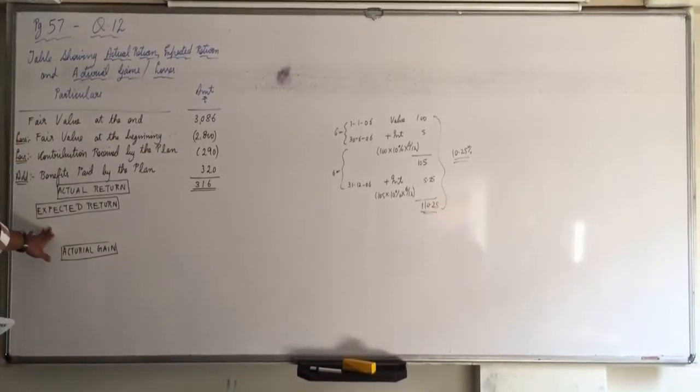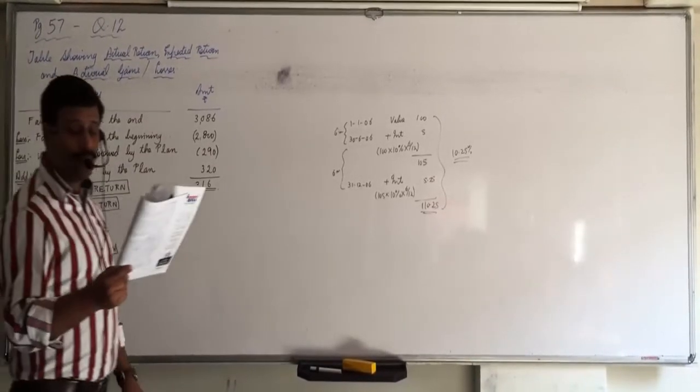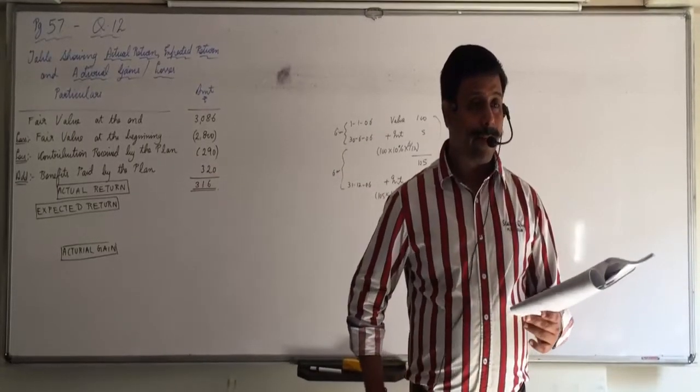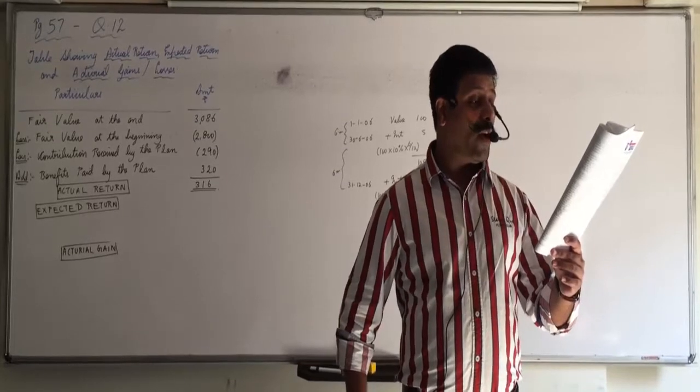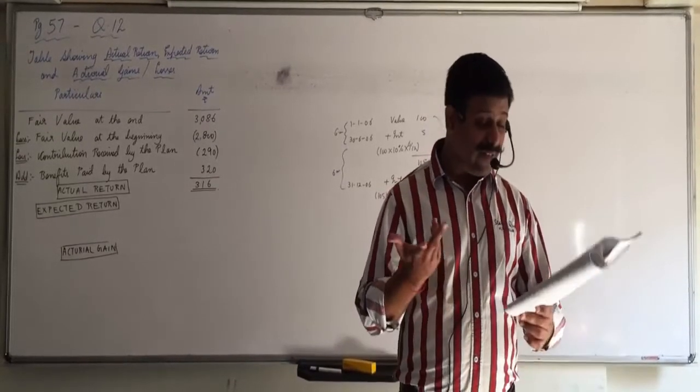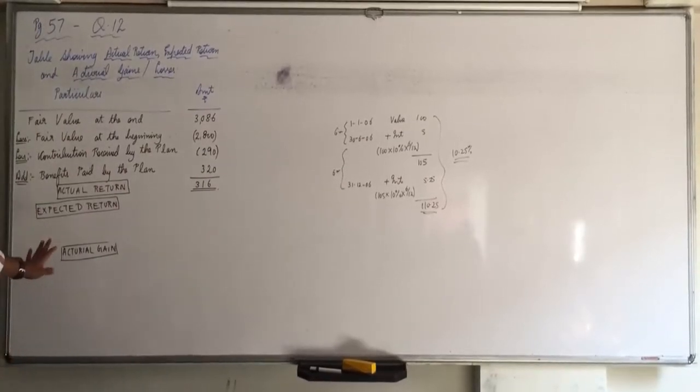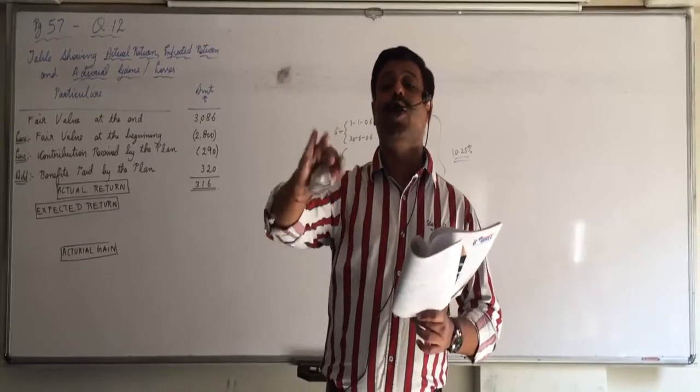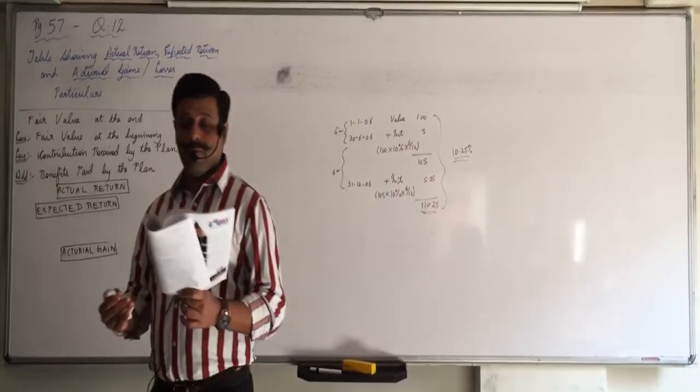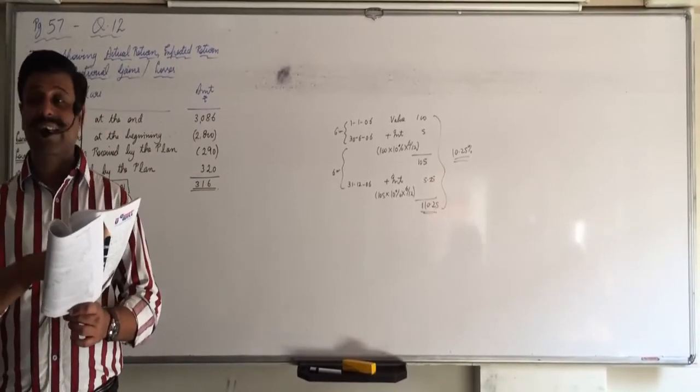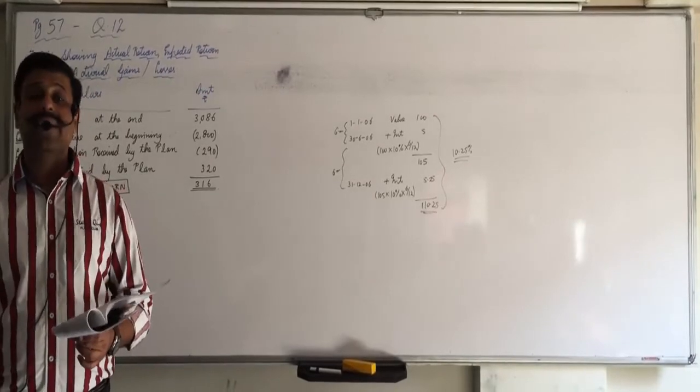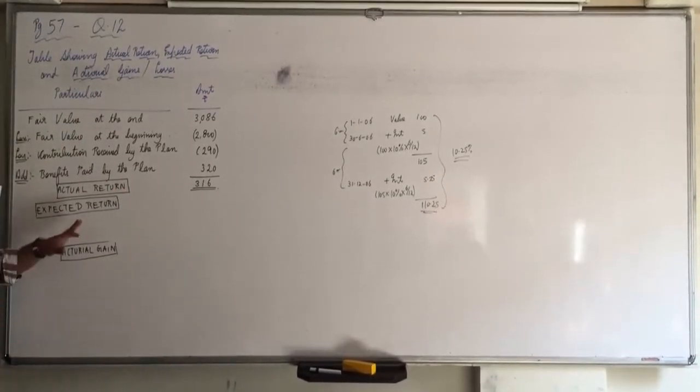So on what value will you count 10.25% for full year? What is the value in the beginning of the year? So on $250,000 you will count 10.25% for full year. And on which value will you count for 6 months? $122,500 minus $47,500. We invested $122,500 minus we received $47,500. What is the net investment from our pocket? $75,000.